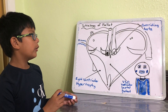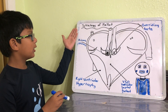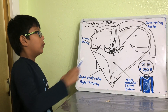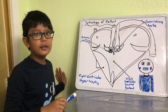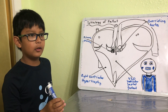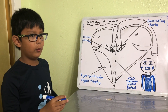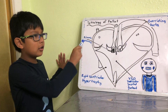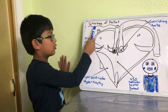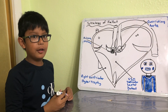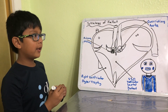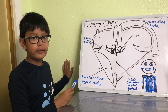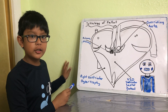Today we will be talking about Tetralogy of Fallot. Don't worry about what Fallot means — that's just the name of the person who discovered it. Tetra from Latin means four, so basically we have four defects in the heart.